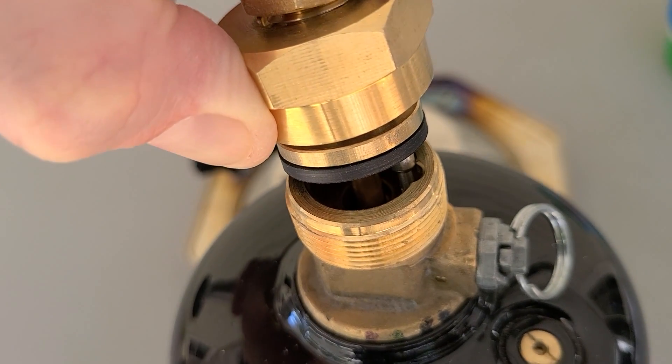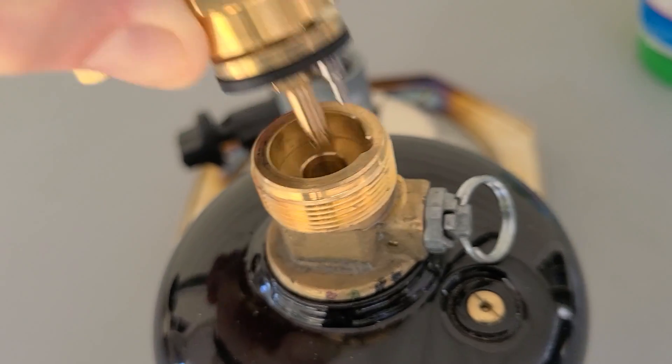So hopefully that answers that question. No, if you accidentally turn this, it's not going to leak out vapor. It has to be hooked to that refill valve for the refill kit for the Fuel Keg in order for it to work. So that's a great safety feature.